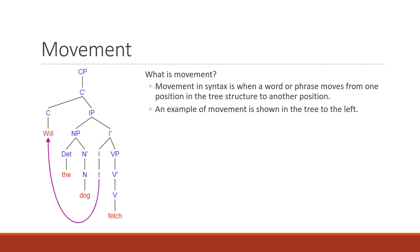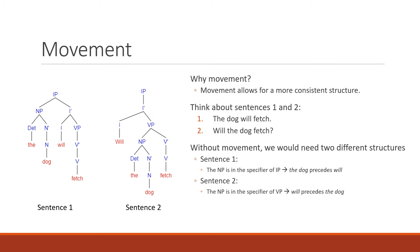What is movement? Movement in syntax is when a word or phrase moves from one position in the tree structure to another position. An example of movement is shown in the tree to the left. This sentence is 'will the dog fetch?' — a question. We will talk about how it changed from 'the dog will fetch' to 'will the dog fetch,' where the purple arrow moves the word 'will' from the specifier of the I-bar to the specifier of the C-bar.